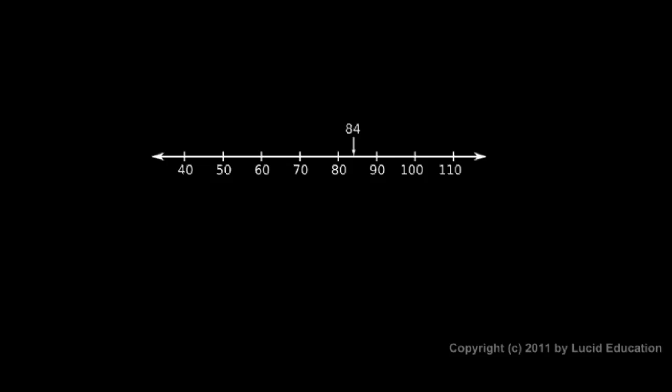Rounding is the process of approximating a number by using a simpler number that's close to the original number. You can picture this on a number line. Here's a number line marked off in increments of ten. The number 84 is marked — you can see 84 is between 80 and 90, but also that 84 is closer to 80 than it is to 90. So if we wanted to round 84 to the nearest ten, we would say it's 80.